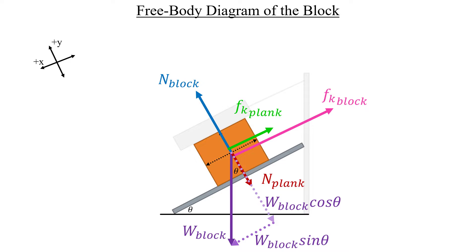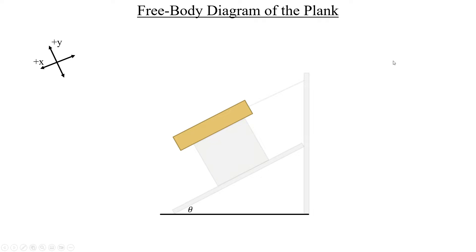Now, although the problem didn't specifically tell us to do a free body diagram of the plank, we're going to have to do so anyway. Otherwise, we don't have enough information to solve part B, as you'll see in a couple minutes here. For the most part, things are pretty similar. The coordinate axes goes onto the plank, and the plank's weight points straight down, and there's a normal force for the plank, which is resulting from the block pushing up on it.